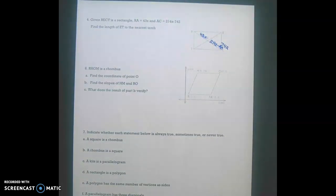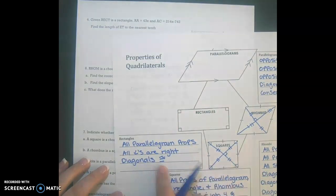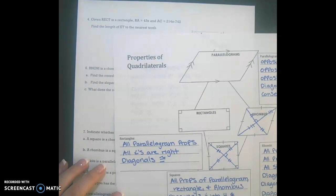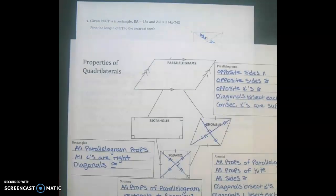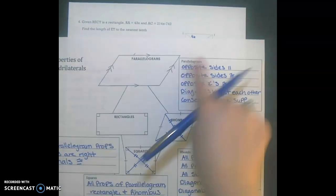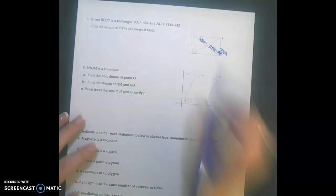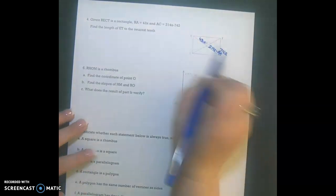So if we review our properties of a rectangle, we know that we have all of our properties of a parallelogram, all angles are right angles, and our diagonals are congruent. And because we're talking about our diagonals, the two things we need to focus on here are that our diagonals are congruent, and because it's a parallelogram, our diagonals bisect each other. So that means that RA is congruent to CA.